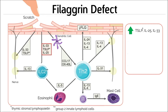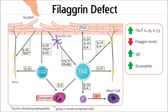Additionally, damage to the skin barrier influences the upregulation of Th2 cytokines, IL-4 and IL-13. This milieu of cytokines further decreases filagrin levels and promotes inflammation by causing an increase of IgE and eosinophils.